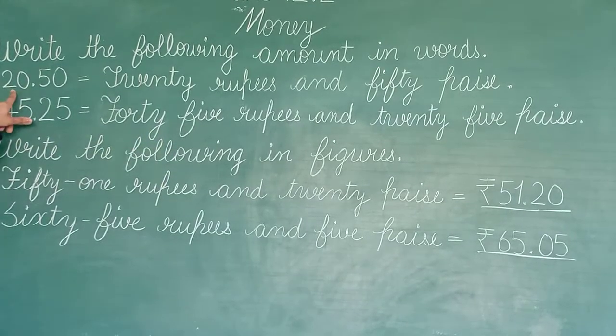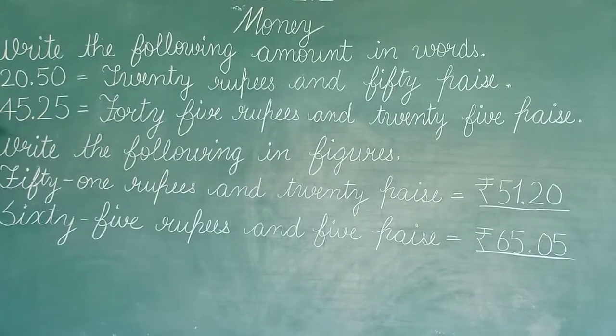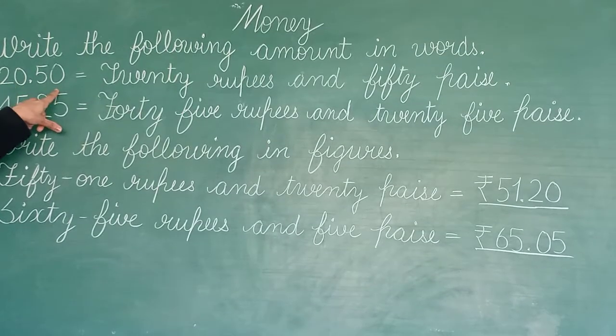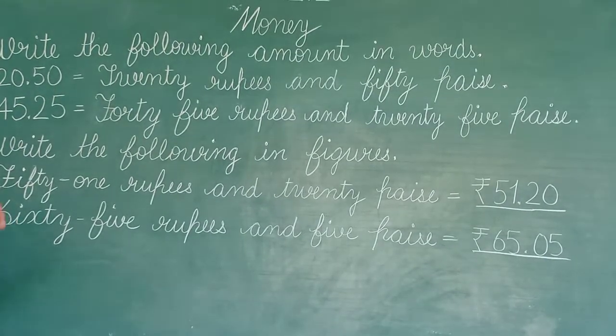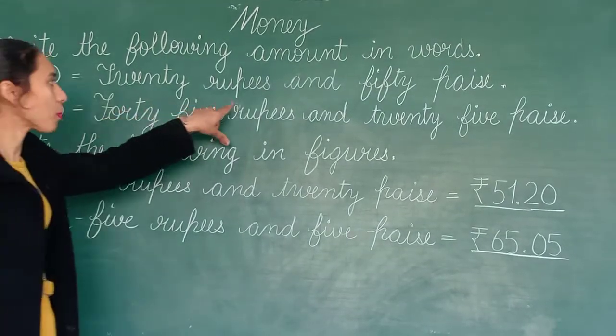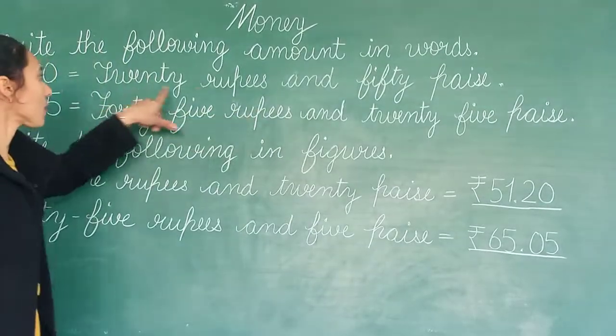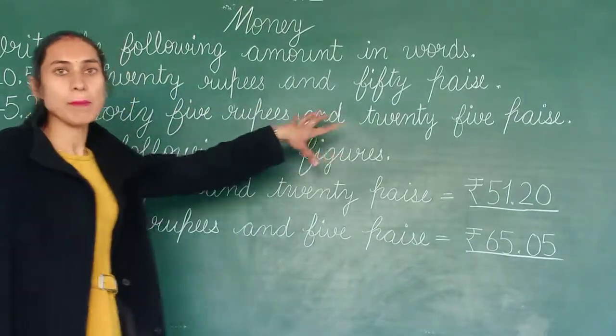First one is rupees 20.50 paise. We have rupees 20.50 paise. How do we write? Twenty rupees and fifty paise.